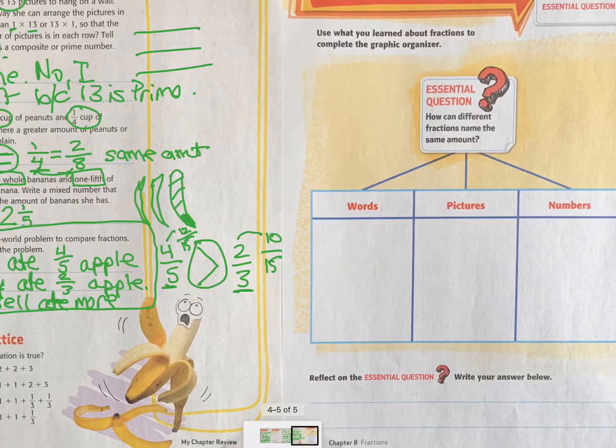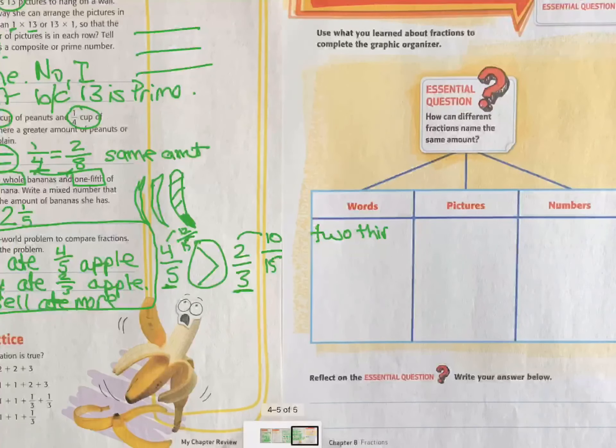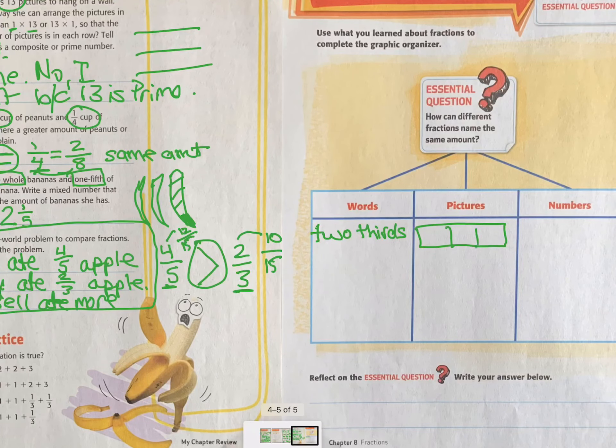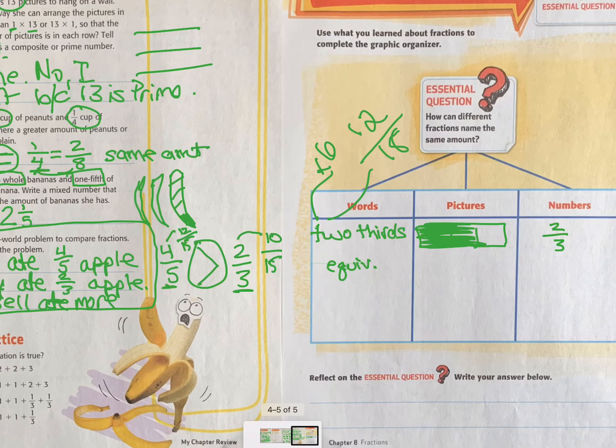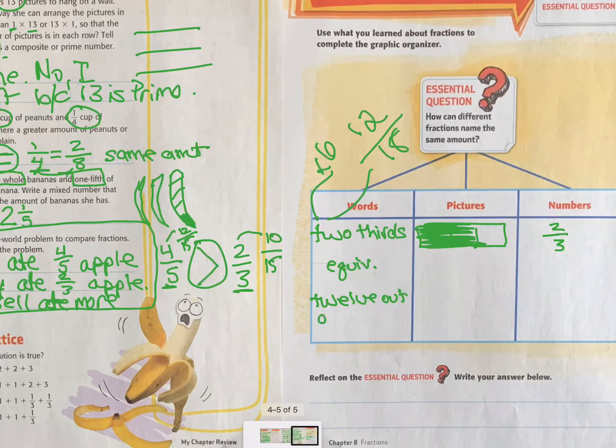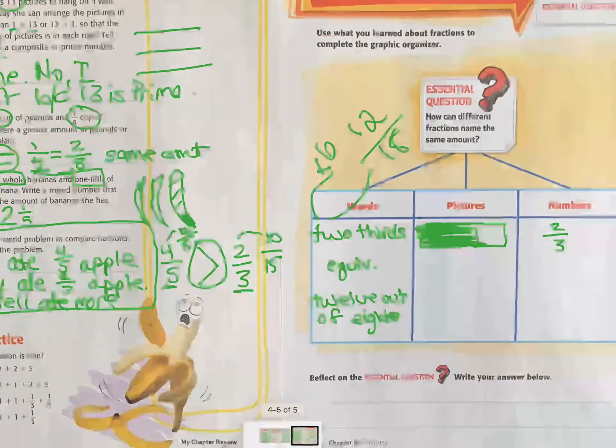And then we went through this page 552 review. I'll do one more example for you. So I would write 2/3. A picture of 2/3 would be something broken into thirds. And I show 2/3. And then the numbers would be 2/3. And then that is equivalent. What do I want to make it equivalent to? Let's multiply by 6. So 2 times 6 is 12. 3 times 6 is 18. I'm going to regret that when I have to draw the picture, right?